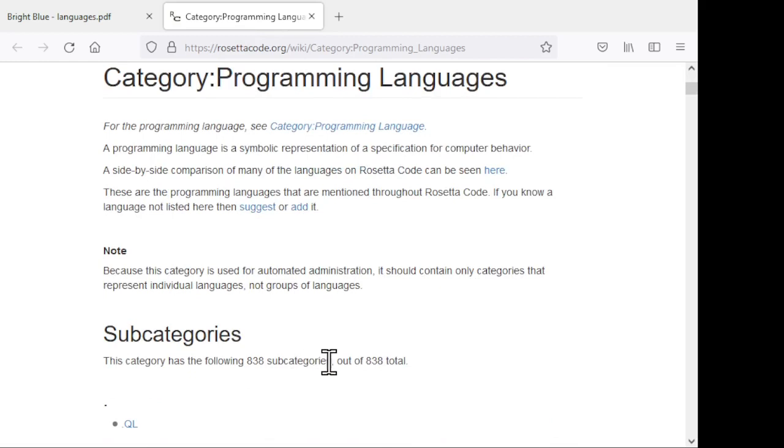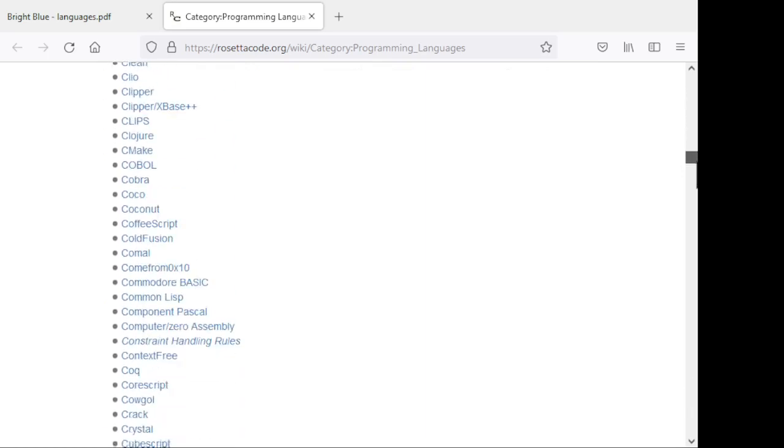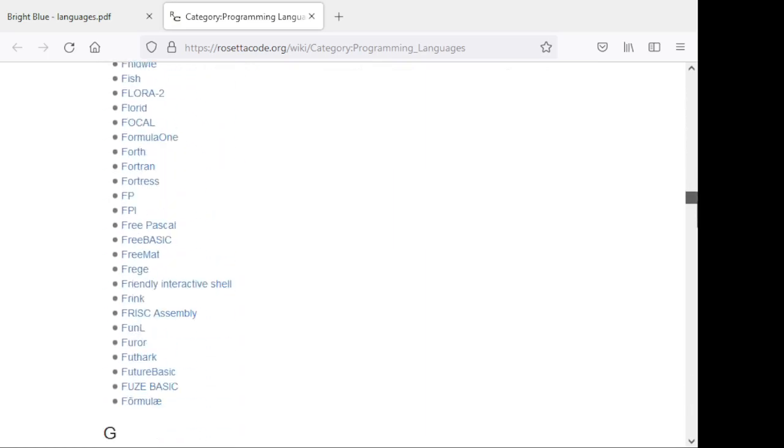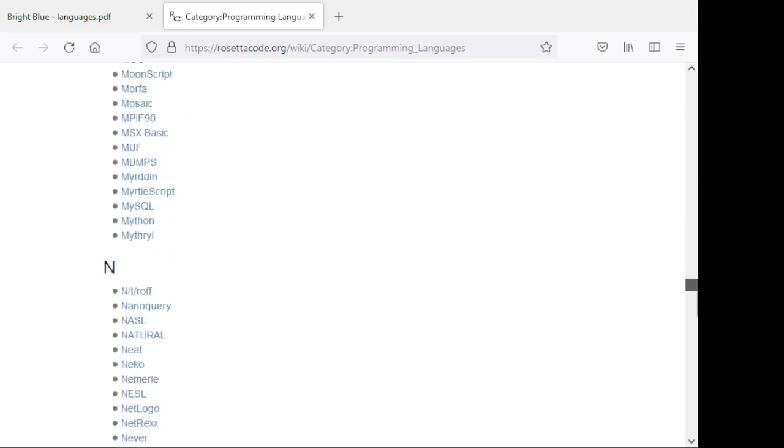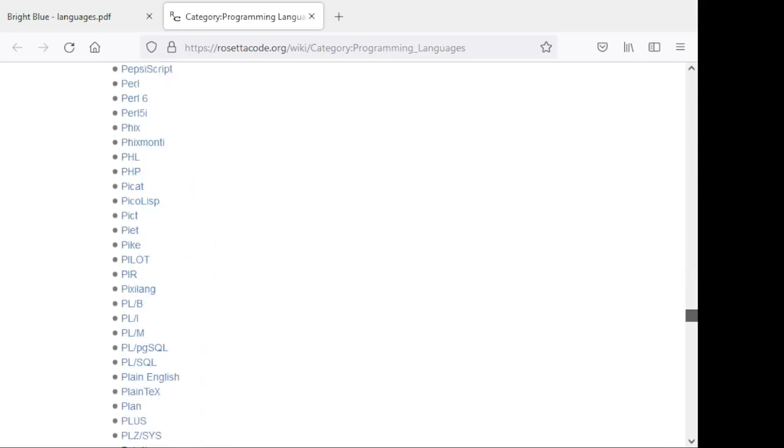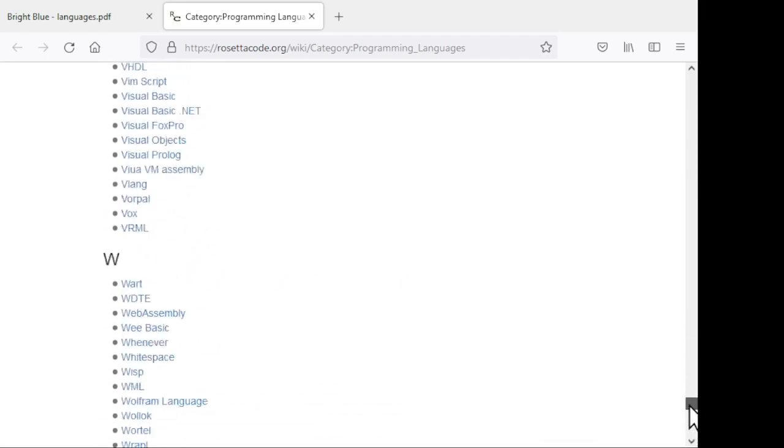So currently they've got 838 programming languages listed here, and examples listed in each of these different languages. And again, there are a ton of different languages. Many of these are designed for very specific purposes or specific systems or specific user groups, but there are just a ton of these things out here.